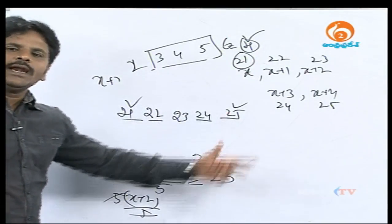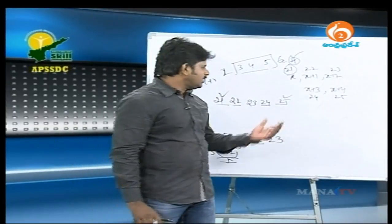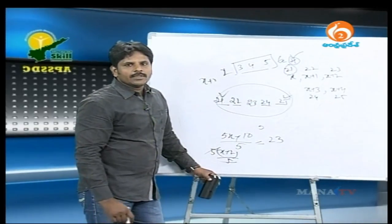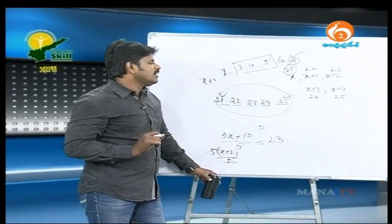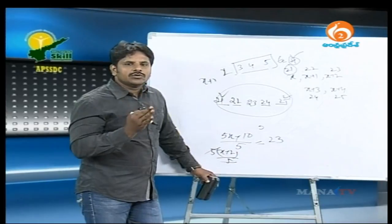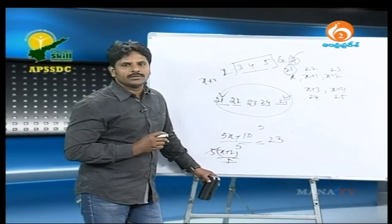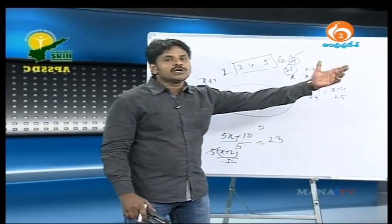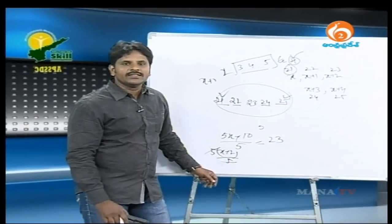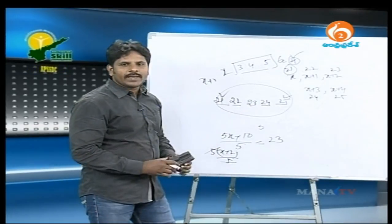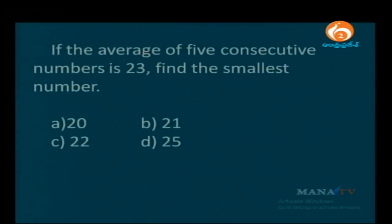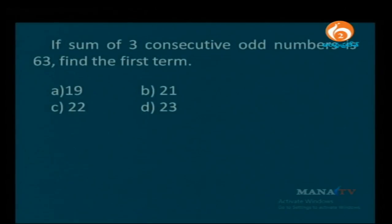For consecutive numbers, 23 is the middle number among 5 numbers. So 2 numbers above: 24 and 25; 2 numbers below: 22 and 21. The smallest number is 21 and the largest is 25. If you are clear with the concept — consecutive natural numbers with 5 numbers and average 23 — then 23 is the middle, previous numbers are 22 and 21, next are 24 and 25. Least value equals 21.